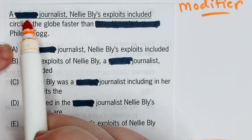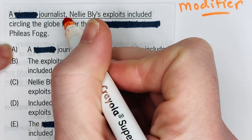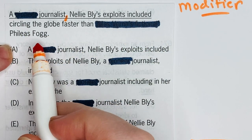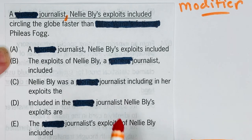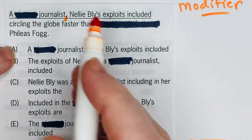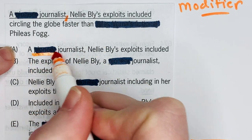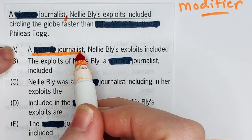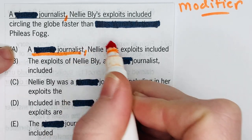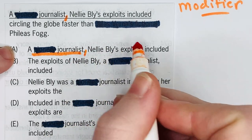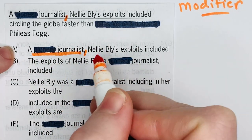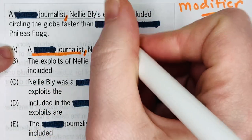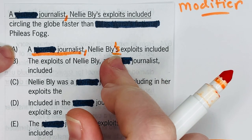Let's take a look at A. 'A journalist, Nellie Bly's exploits included circling the globe faster than Phileas Fogg.' At first, this isn't too bad. We have this modifier — the word I redacted from all of them is 'pioneer,' so it reads 'pioneer journalist' — and then we have a comma and then Nellie Bly. You might think a journalist is describing Nellie Bly, but there's an idea here in modification that is tested very often on the GMAT, and that is the possessive.